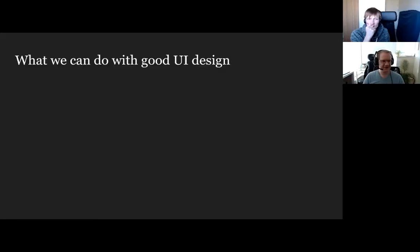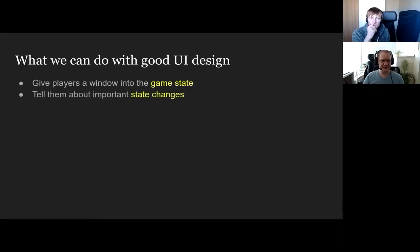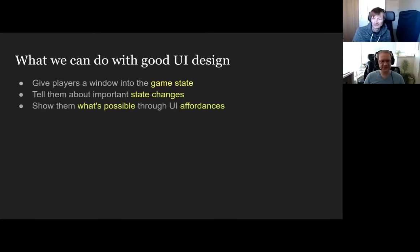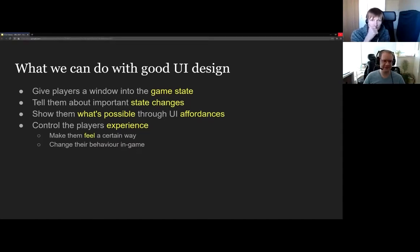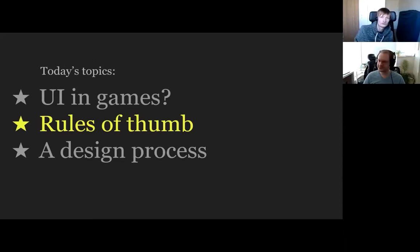So what we talked about for design: first, you want to give them a window into the state of the game, then tell them about important state changes, and you can show them what they can do through affordances — like is this button clickable, how do I activate this ability? And you can also control what the players feel. Someone mentioned Dead Space where the health is shown on the character's back as a progress bar — that does show it as a percentage even though it's a horror game.